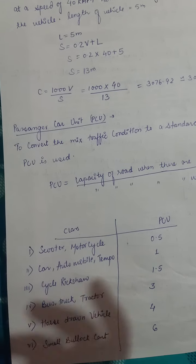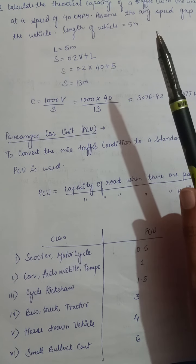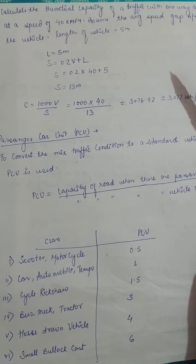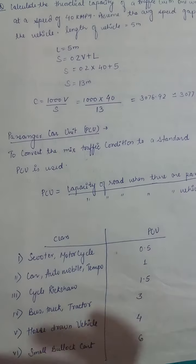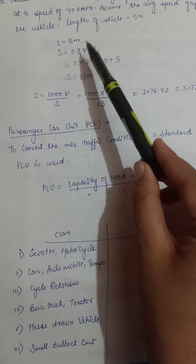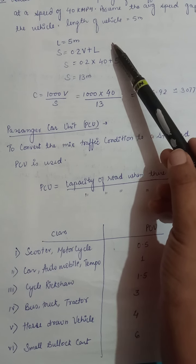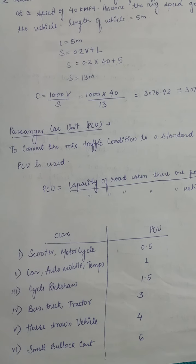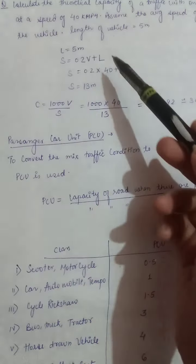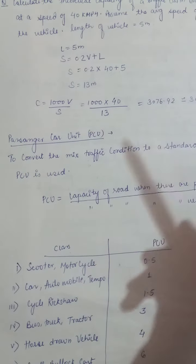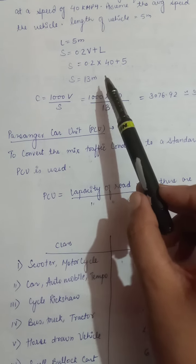Question: Calculate the theoretical capacity of traffic with one-way traffic at a speed of 40 kmph. Assume the average speed gap between vehicles; length of vehicle is 5 metres. Speed V = 40 kmph and L = 5 metres are given. First we calculate space headway using S = 0.2V + L = 0.2 × 40 + 5 = 8 + 5 = 13 metres.